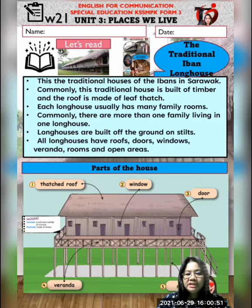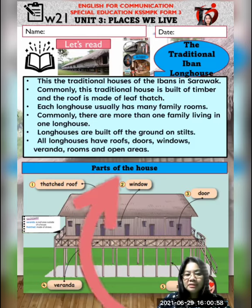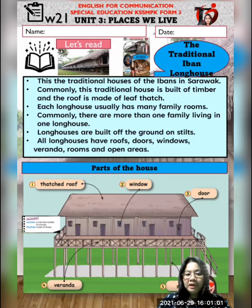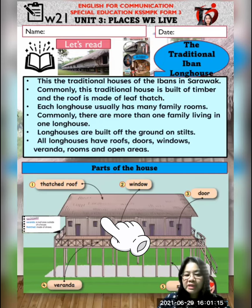Based on this text, kamu lihat ini petikan berkaitan dengan rumah panjang di Sarawak. Dia kata rumah panjang ini dibuat daripada kayu dan rumbungnya dibuat daripada leaf thatch - dia macam atap ya, atap atau jerami yang disusun. Kalau kamu lihat di sini, ini yang dikenali sebagai thatch roof.